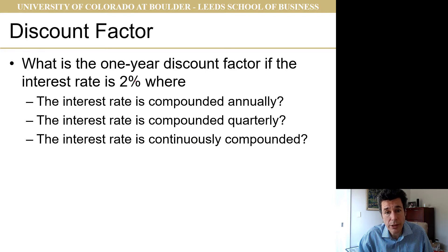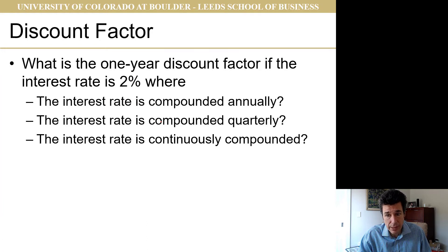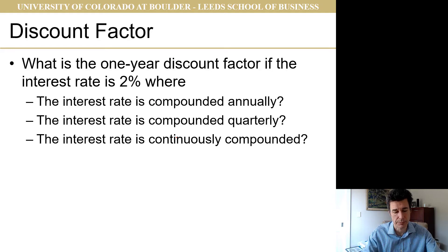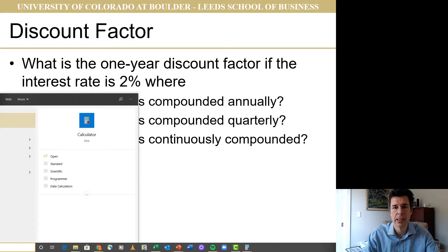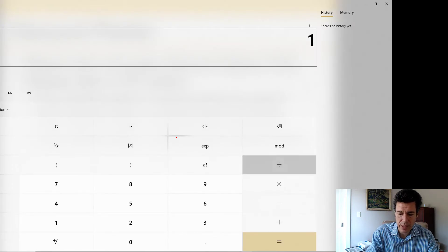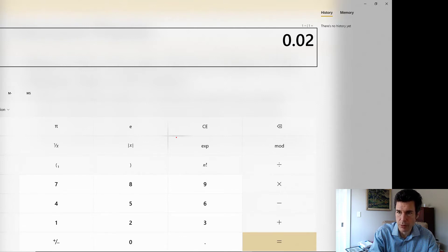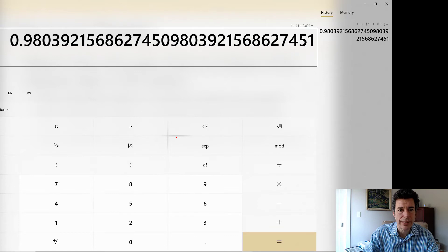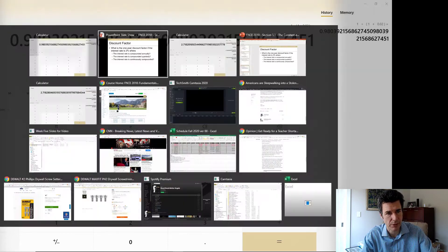We're going to find the one-year discount factor if the interest rate is 2%, where the interest rate is compounded annually, quarterly, or continuously compounded. Let's get our calculator. Compounded annually, the discount factor is 1 divided by (1 + 0.02).